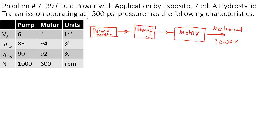Step number one is to draw the schematic diagram of the problem. If you don't draw the schematic diagram and try to solve the problem, it will not be easy — it's going to be much worse than difficult. So draw the schematic diagram. This problem is basically asking you to calculate the motor displacement — what size motor do you need? The system operates at 1500 psi.